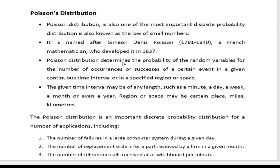Similar to binomial distribution, Poisson distribution determines the probability of a random variable for a given number of occurrences or successes. The random variable represents the number of successes or occurrences for a certain event in a continuous time interval or in a specified region or space. The time interval may be any length — second, minute, day, week, month, or even a year. Region or space may be a certain place, miles, kilometers, etc.